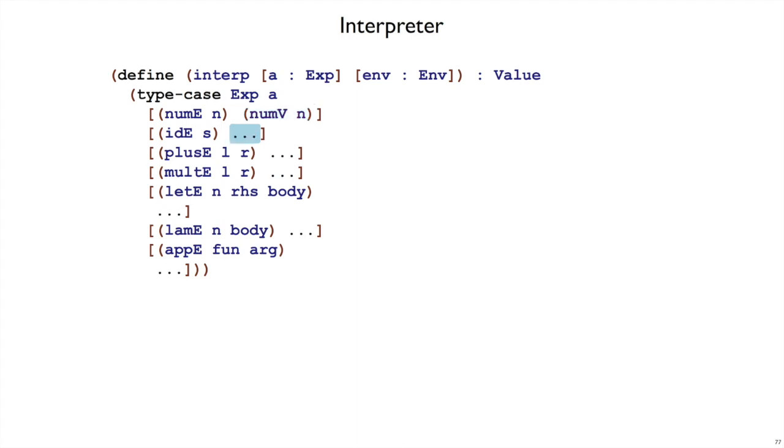In the IDE case, we've got a symbol for a variable name that we want to lookup in the environment. Now that our environment maps names to values, not just numbers, it's still just lookup.